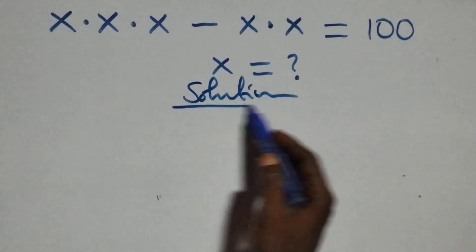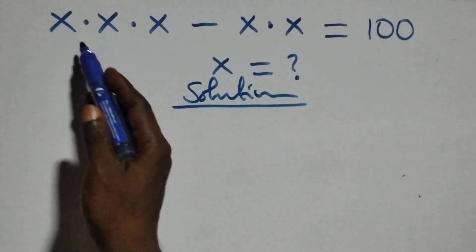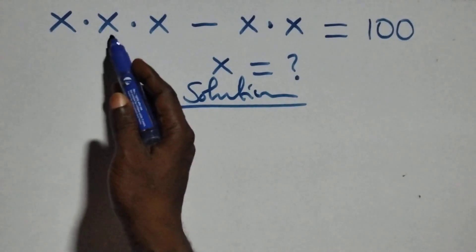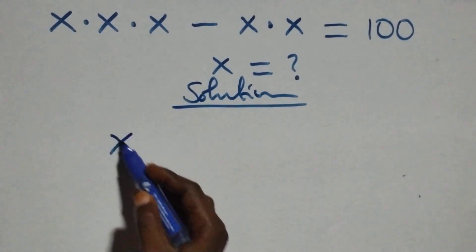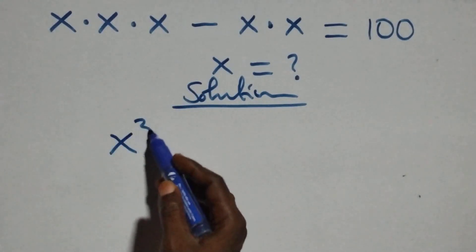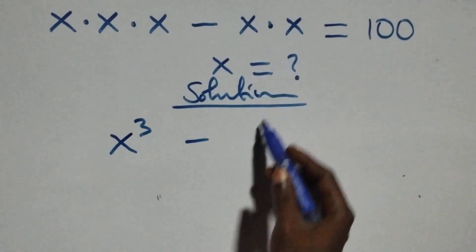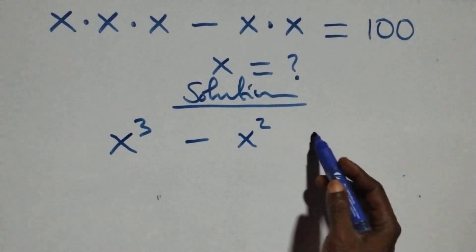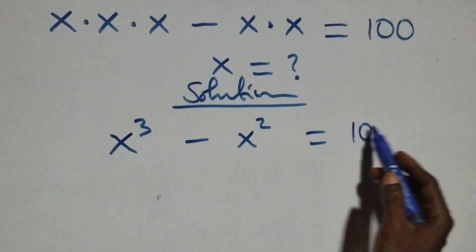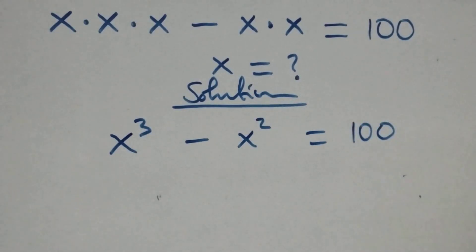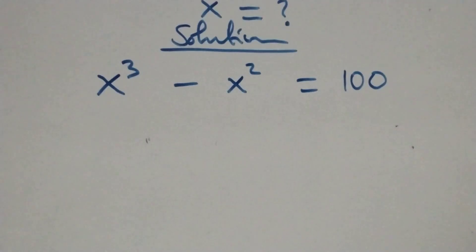And what we have here, we can multiply this directly: x times x times x, that's the same thing as x cubed minus x times x as x squared equals to 100 from here. The next step here,